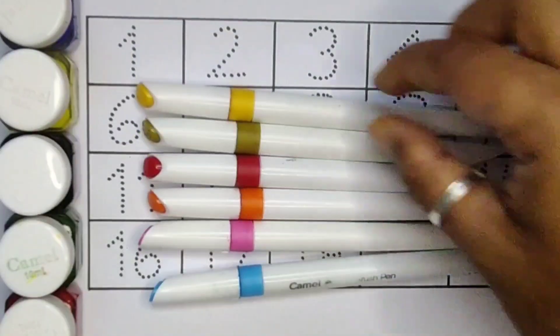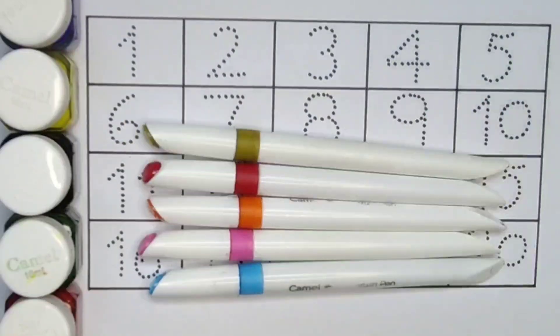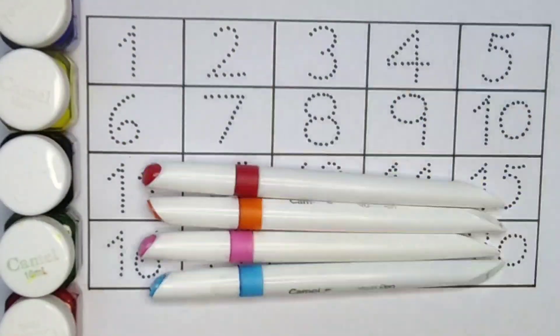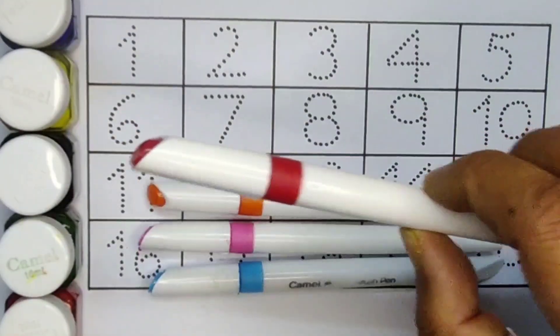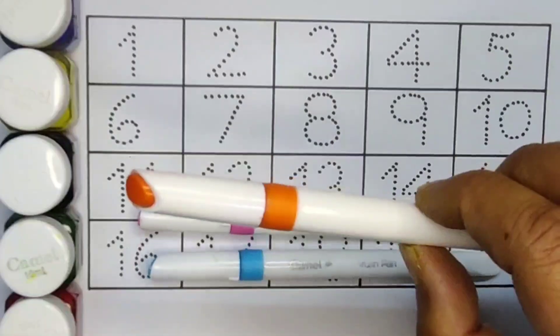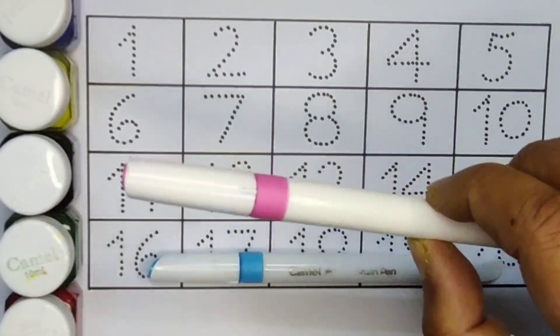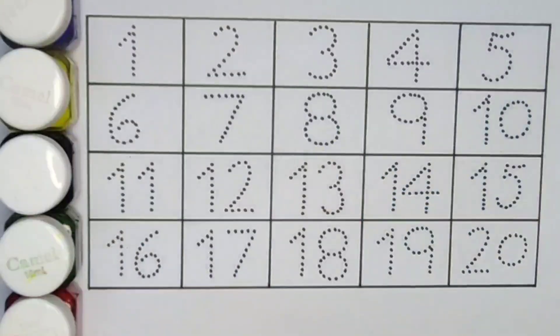First we are going to know the color's name. Light green color, yellow color, olive color, red color, orange color, pink color, and sky blue color.